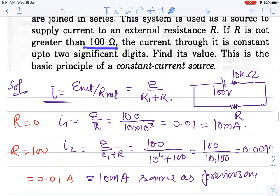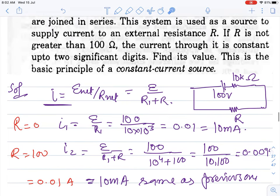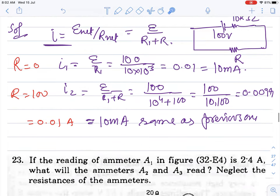Ohm's law: E_net upon R_net, both in series. Only one battery, so put it. Not to exceed 100, so zero to 100 - we calculate two extreme limits. Put r = 0, this remains, calculate EMF, we get 0.01, which is 10 milliamperes. Other extreme limit at 100, put 100 here, solve, we get 0.009, which is 0.01, again equal to 10 milliamperes, same as previous. So if we have a battery with very high external resistance in series, and we supply current to a low resistance, the current remains almost constant even if that low resistance value changes slightly up or down.